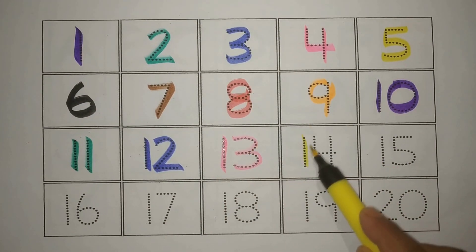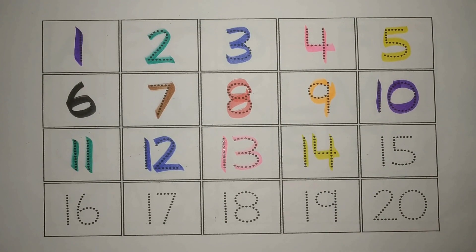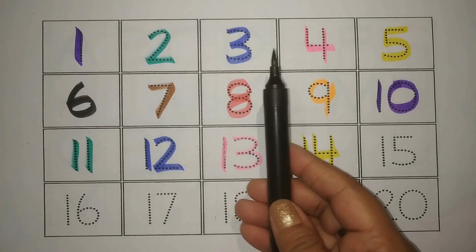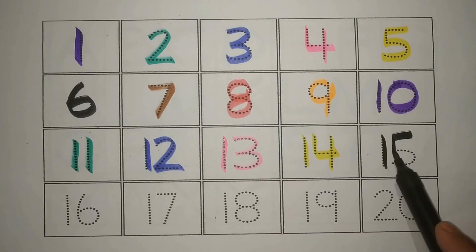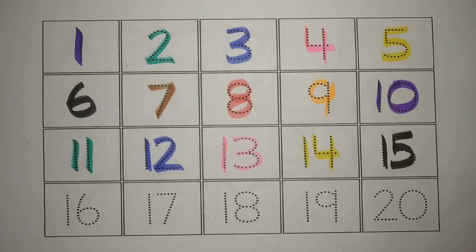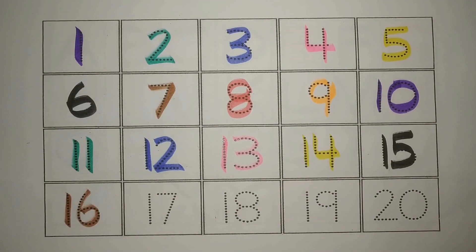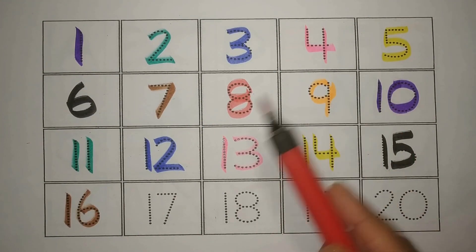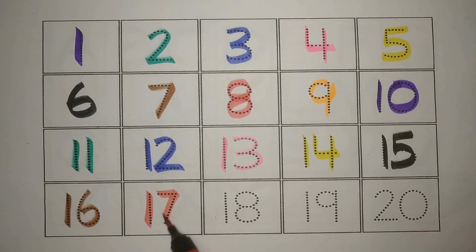Yellow one four fourteen, chodha. Black one five fifteen, pandra. Brown one six sixteen, sola. Red one seven seventeen, satra.